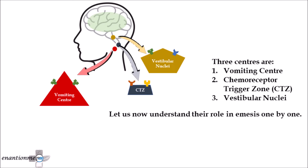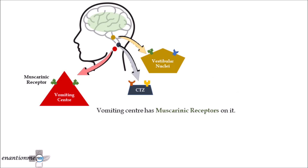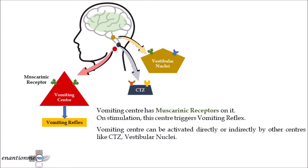Let us now understand their role in motion sickness one by one. The vomiting center has muscarinic receptors on it. On stimulation, this triggers the vomiting reflex. The vomiting center can be activated directly or indirectly by other centers like CTZ and vestibular nuclei.